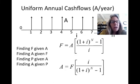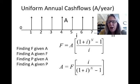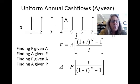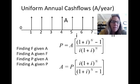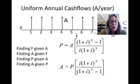For the F given A equations, any engineering economy book will go through the derivation, but we won't cover that here. You can find F given A by multiplying out the formula, or find A given F by rearranging it. The P-value equations are also provided. Every engineering economy book will have all these equations near the beginning.